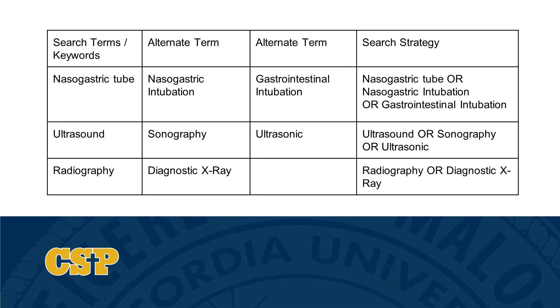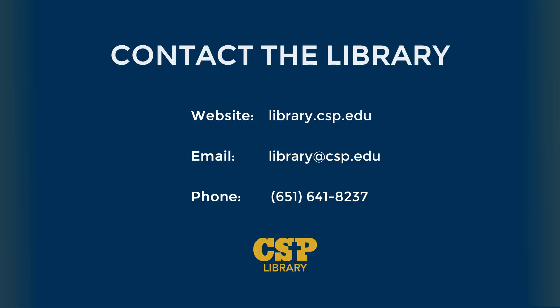The next step is to create a search strategy — a librarian term for putting together the words you are going to search in a database. Place an OR in between each of the alternate terms for each keyword. An OR between search terms means they are synonyms of each other. For example, you would retrieve articles that use 'Nasogastric tube' OR 'Nasogastric intubation.' For information on finding and searching databases, please watch Part 2 and Part 3 of Searching a PICO Question.